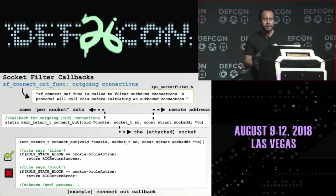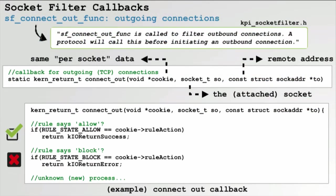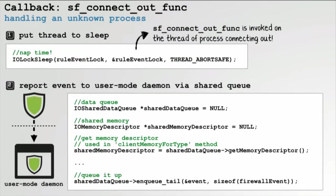Next is the connect out callback. This is called before initiating an outgoing connection. It takes the same cookie, which we've set to either allow, block, or ask, and the socket and the remote address that the socket is trying to connect to. If the action has been set to allow, we just return okay — this tells the operating system we are okay with allowing this connection to continue. If it's set to block, we return an error code, which tells the operating system we want to block the connection. And if it's set to ask, we have to execute some extra logic to determine whether to allow or block the connection.